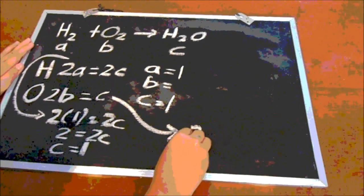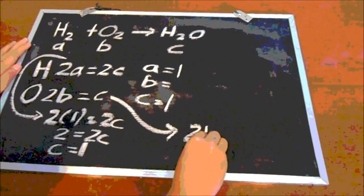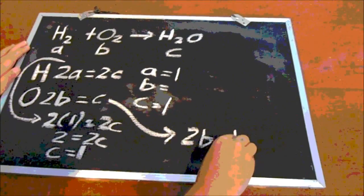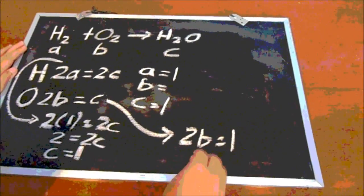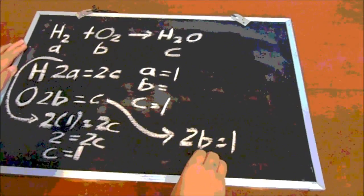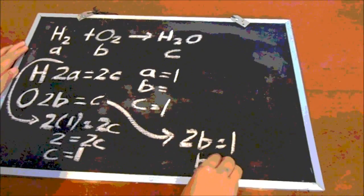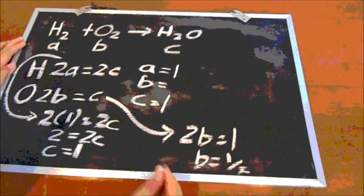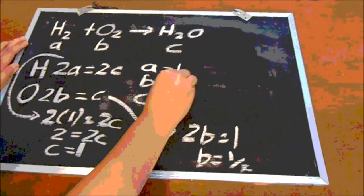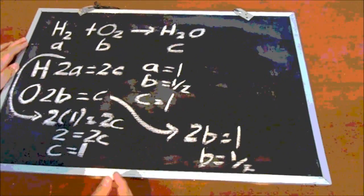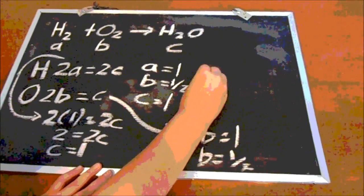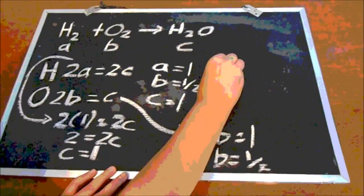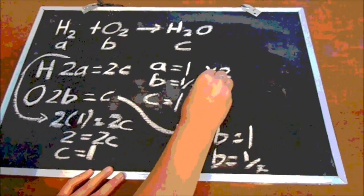And now for the oxygen, 2B is equal to C. And because we know that C is 1, so we write down 2B equals to 1. B is equal to one half. And because we have to use whole numbers, we are not allowed to use fractions. So we have to multiply to the nearest whole number, so we multiply by 2.